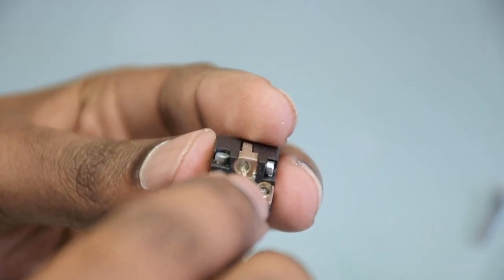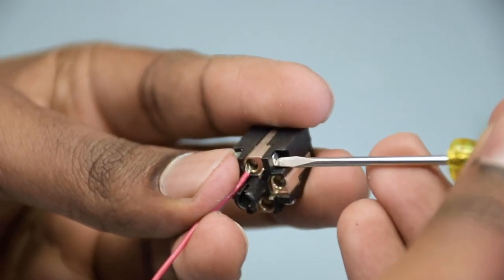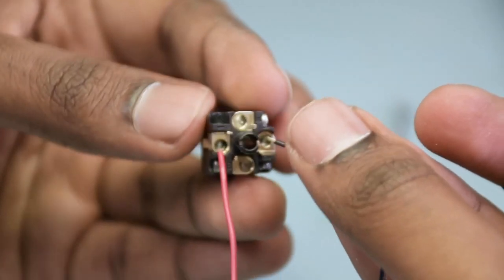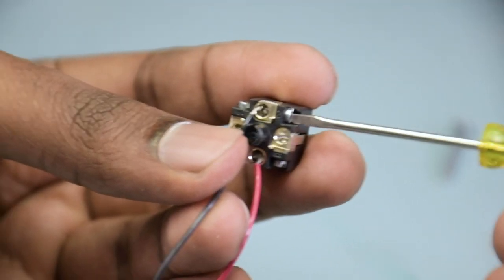Now red is going to be positive. I'm connecting red to supply over here like so, and black is going to be positive output. I'm going to connect black to positive output over here like so.